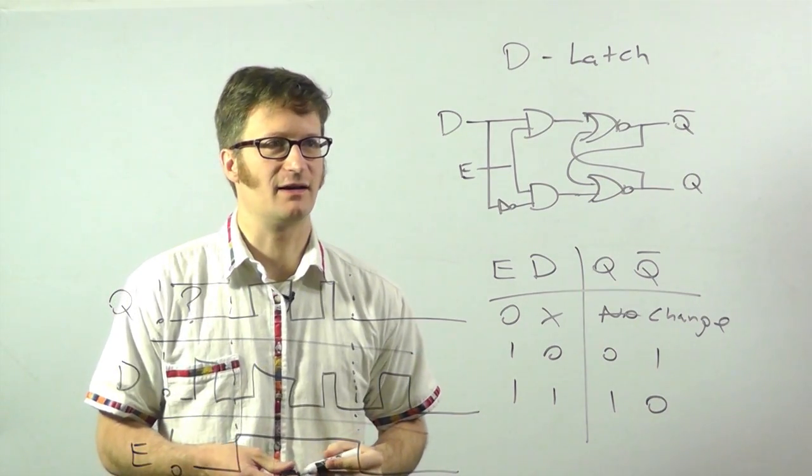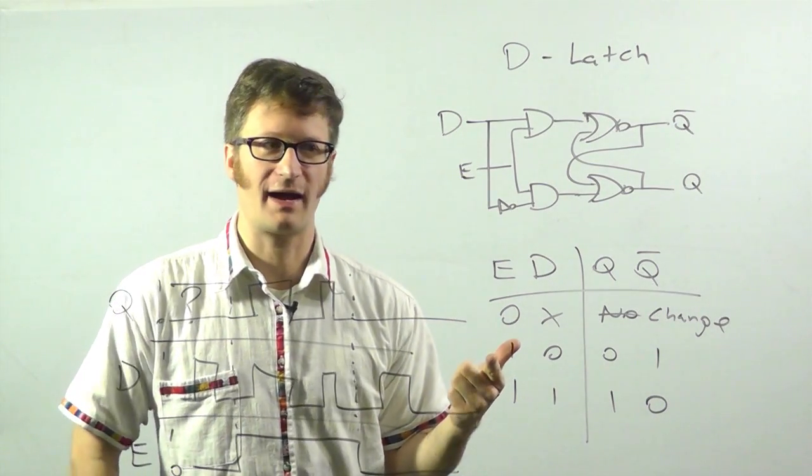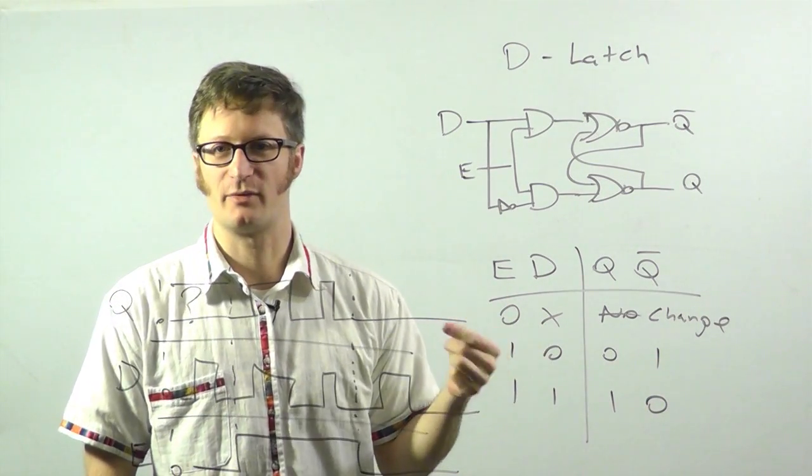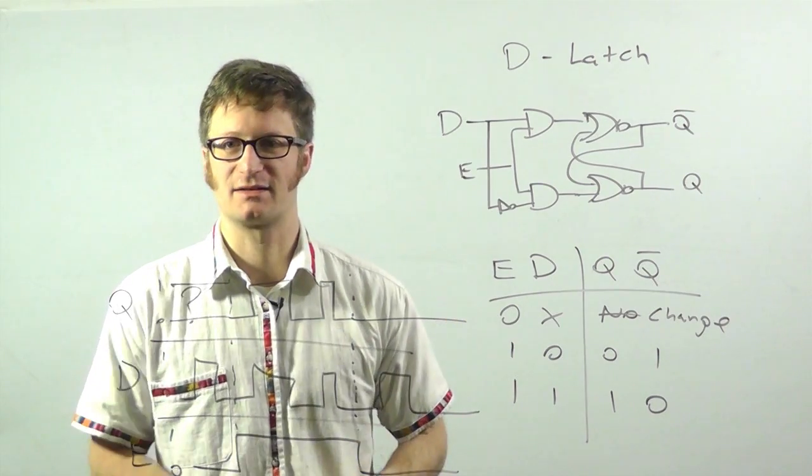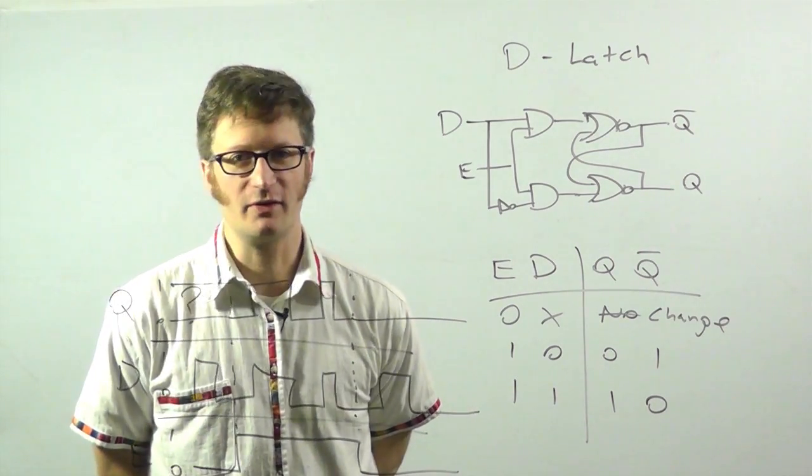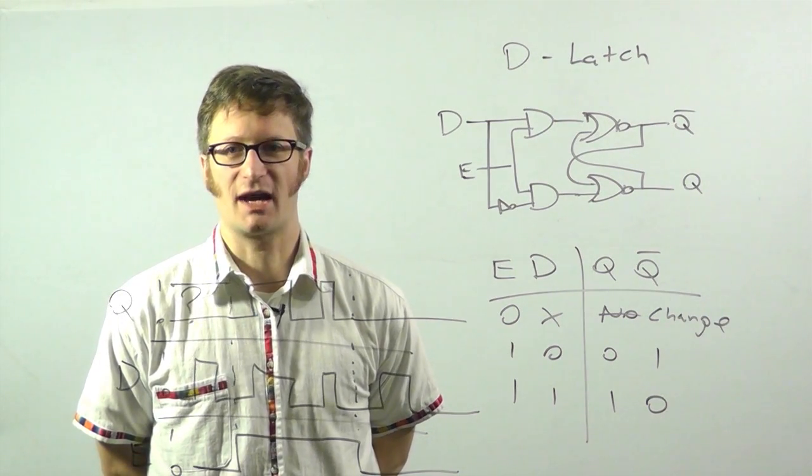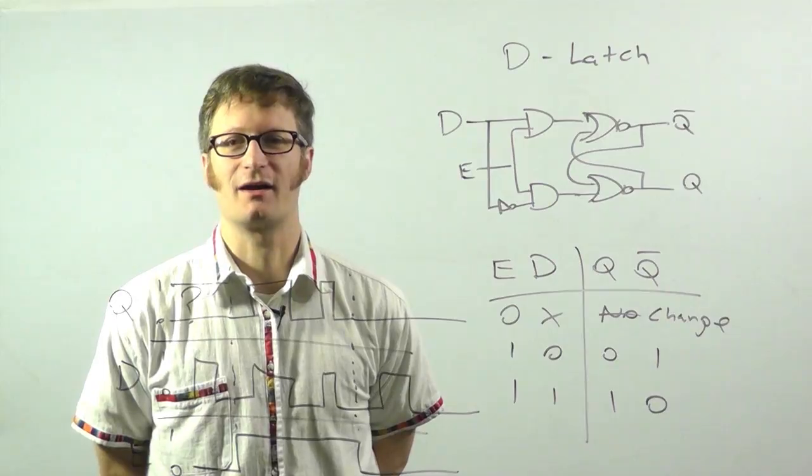So that was latches. We showed you the SR latch, the S bar R bar latch, both of those with enable, and then the D latch. Hopefully you found this video useful. If you did, take a look at my other videos. I'm Jack Buffington for RobotBrigade.com.